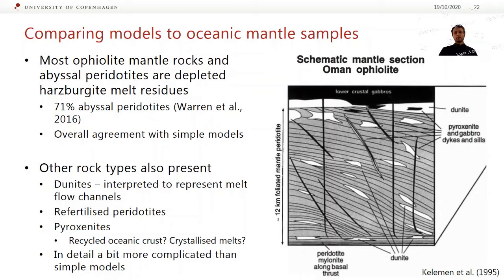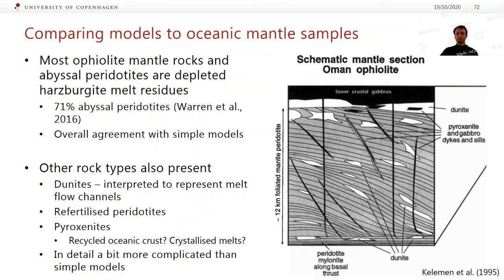We're going to compare that model to oceanic mantle samples. In terms of what we see in ophiolites and abyssal peridotites, the majority are depleted harzburgite melt residues — about 71% of abyssal peridotites are harzburgitic, and a lot of ophiolitic mantle is also harzburgite, so overall we're seeing pretty broad agreement with that model. But in detail it's a little bit more complicated. We don't just see depleted harzburgites — we also see dunites, interpreted to represent melt flow channels. We can tell these are melt flow channels and not ultra-depleted residues because they have quite high rare earth element concentrations similar to mid-ocean ridge basalts. We also see some re-fertilized peridotites, some pyroxenites, and there's debate on whether these are recycled oceanic crust or crystallized melt stuck at depth.